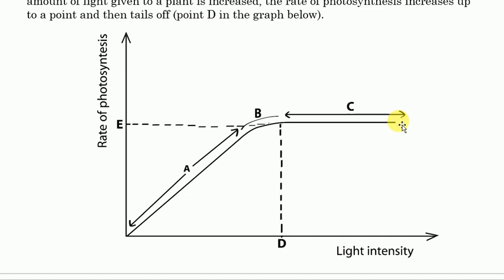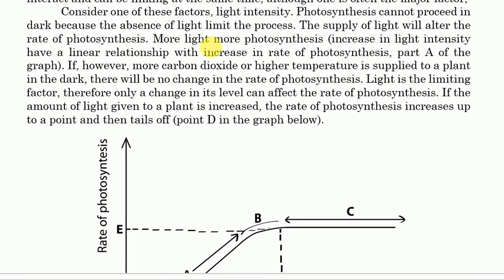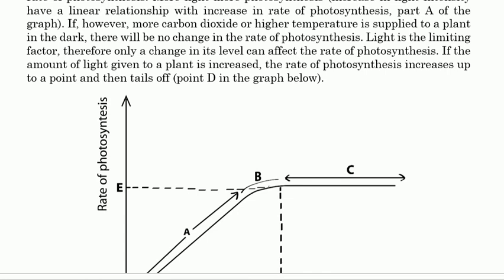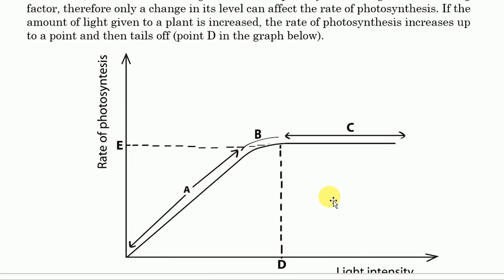As you can see from the explanation of the graph, the increase in light intensity has a linear relationship with the rate of photosynthesis up to point D. If more carbon dioxide or higher temperature is supplied to a plant in the dark, there will be no change in the rate of photosynthesis — light is the limiting factor, therefore only a change in its level can affect the rate of photosynthesis in part A. If the amount of light given to a plant is increased, the rate of photosynthesis increases up to a point and then levels off. At point D, light is no longer the limiting factor, and the graph becomes horizontal.